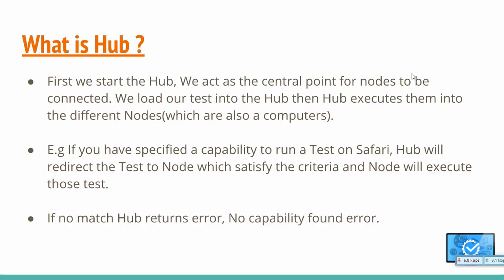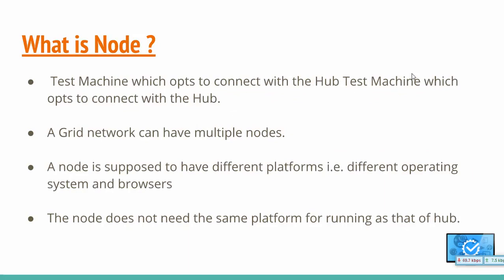The hub is the central point that controls the nodes. Selenium Grid is a network of connected test machines, and the hub controls all the nodes. If there is no match of capabilities, you generally get a 'no capability' error. A node is any test machine that you have added to the hub, which runs your test cases whenever it receives an instruction from the hub. A grid can have multiple nodes, and ideally each node should be a different platform to maximize coverage.